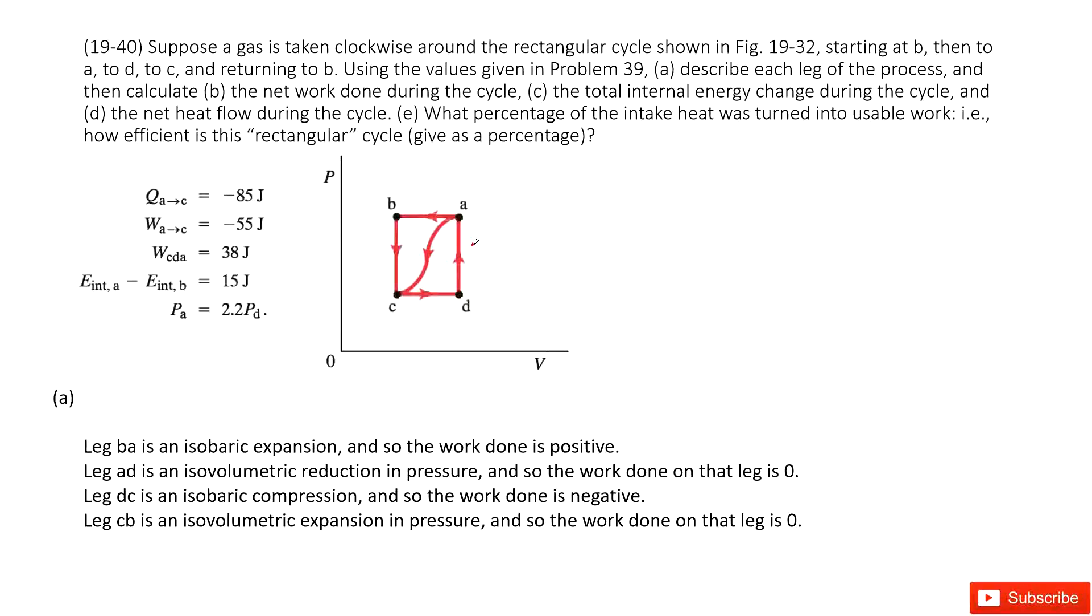We can see we have this square in the PV graph. It tells us we're starting at B and then going to A, to D, to C. First one, let's describe each side.